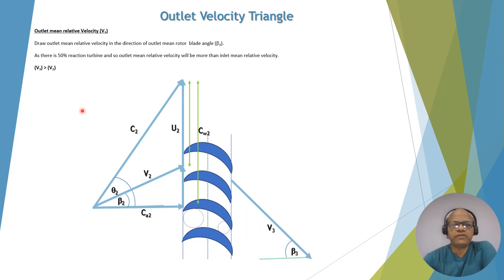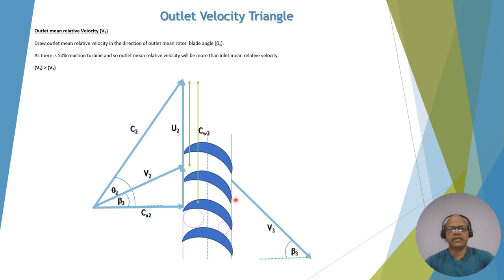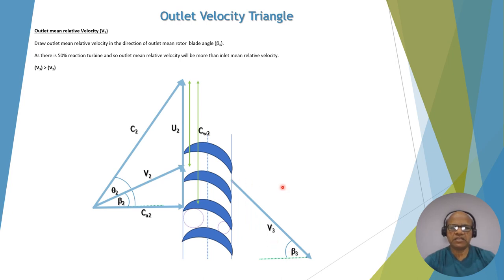Now let's draw the outlet velocity triangle. We draw the outlet mean relative velocity V3, which is larger than V2 because there is a reaction. Reaction means the outlet cross-section area is smaller, and that is why the relative velocity V3 is larger than V2. Beta 3 is the outlet mean blade angle at the mean position. So V3 is greater than V2 because of reaction.